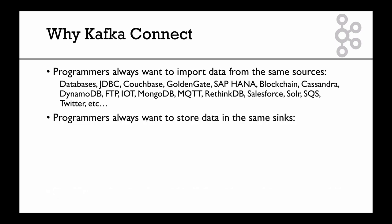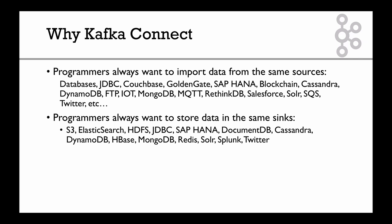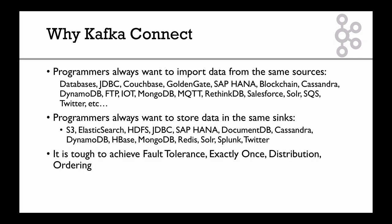Also, we always want to store data into the exact same things: S3, Elasticsearch, HDFS for Hadoop clusters or JDBC databases, SAP HANA, DocumentDB, Cassandra, DynamoDB, and so on. With Kafka, we've seen that it's really tough to achieve fault tolerance, exactly-once delivery, distribution, ordering, and all these things.